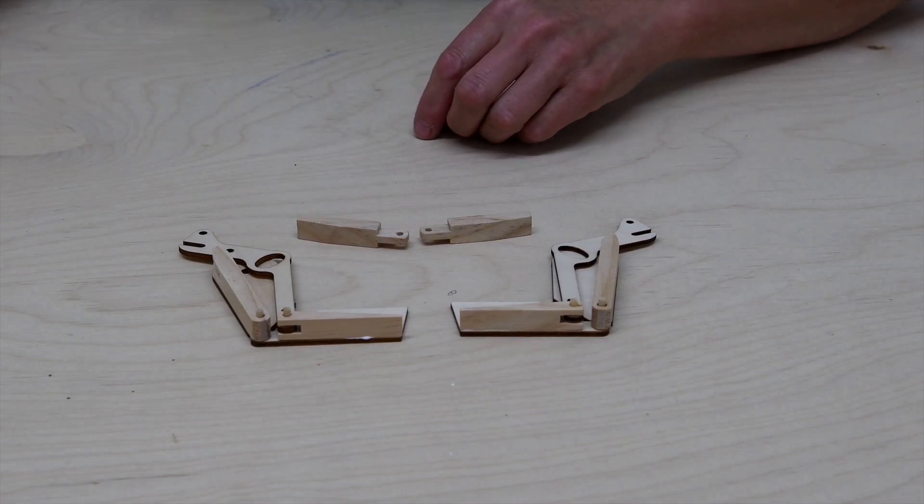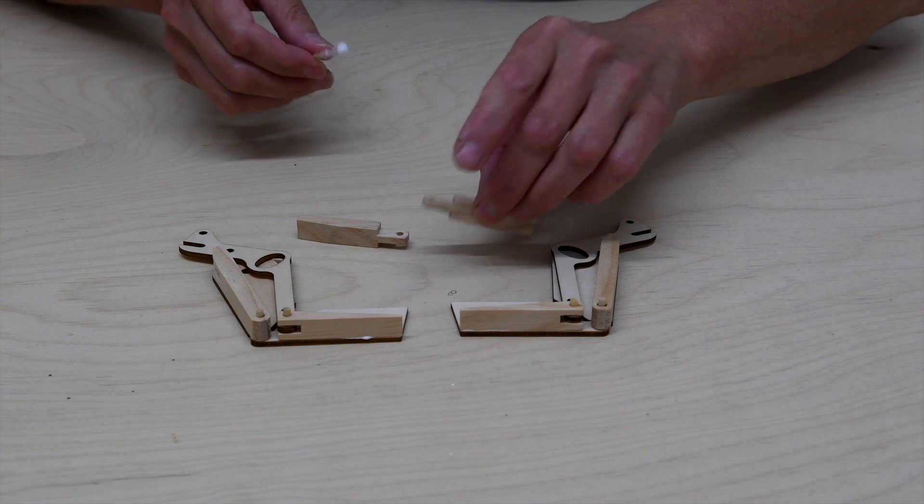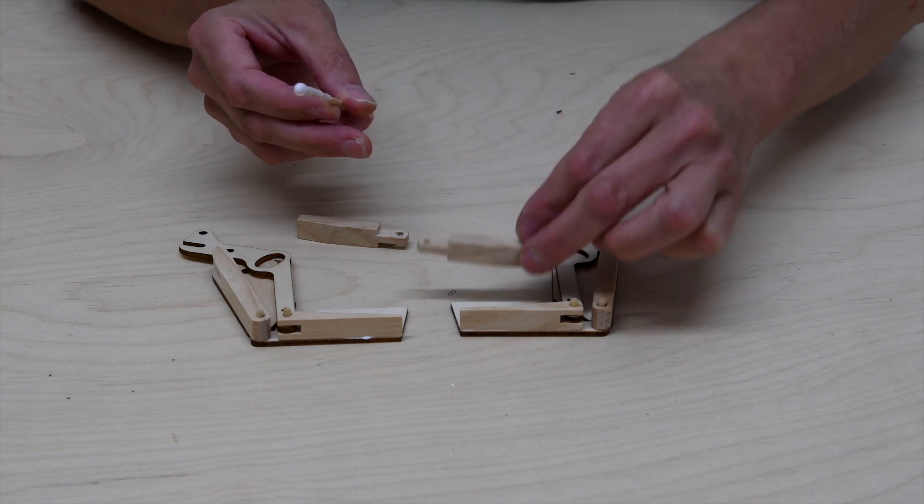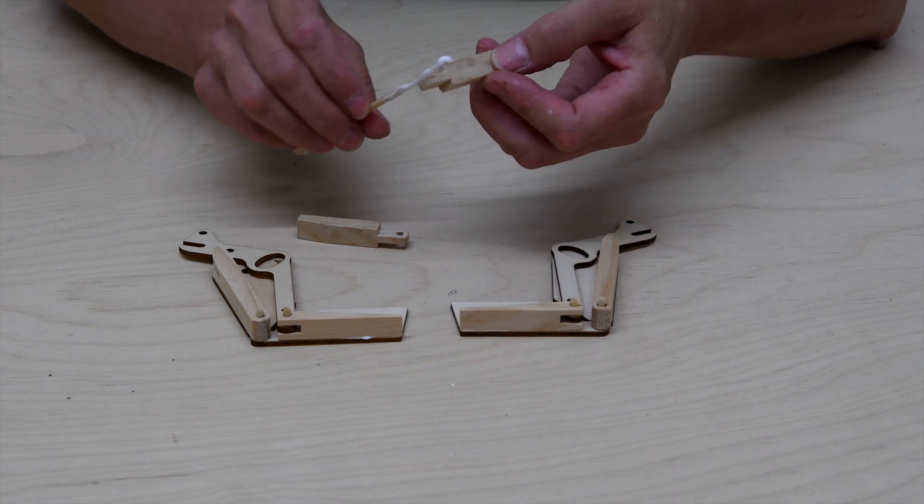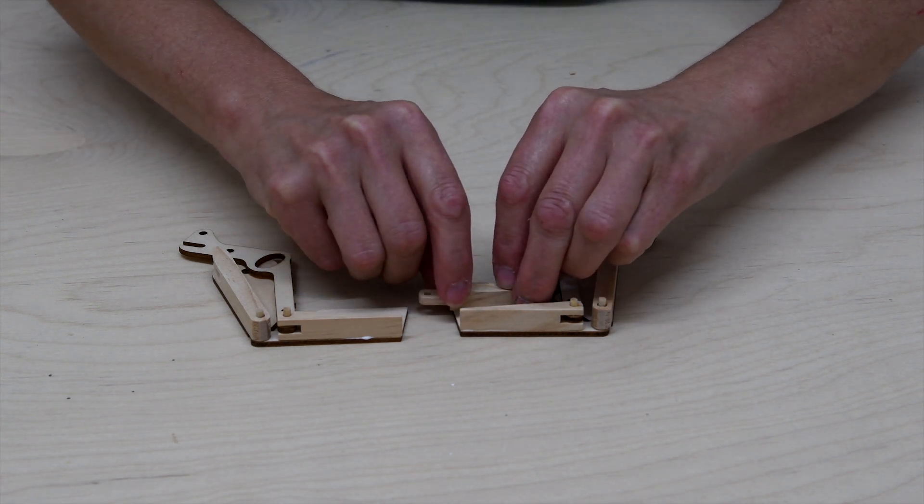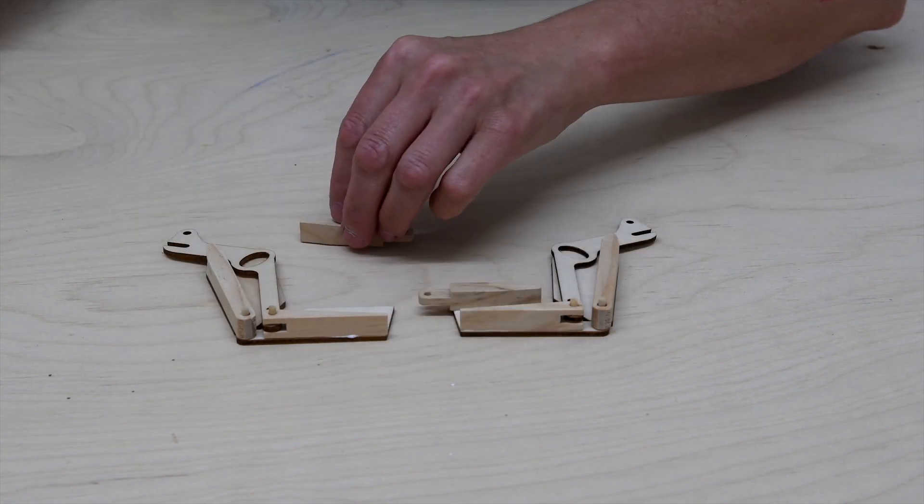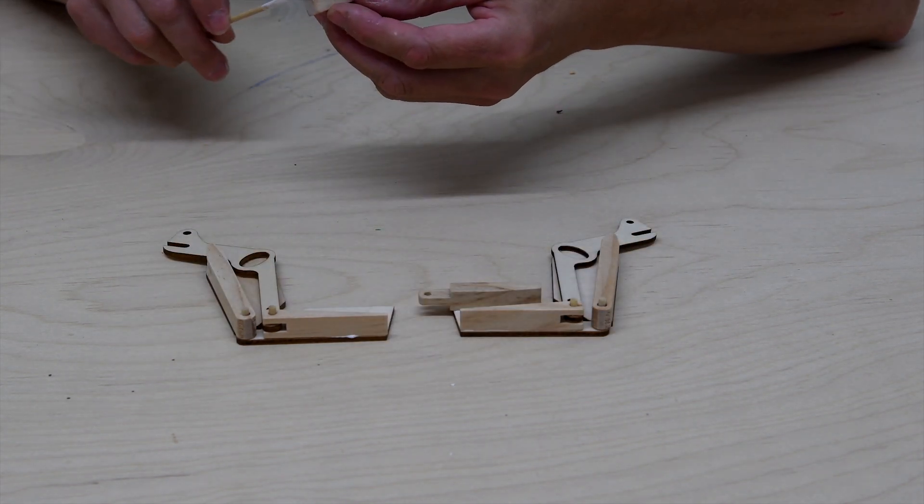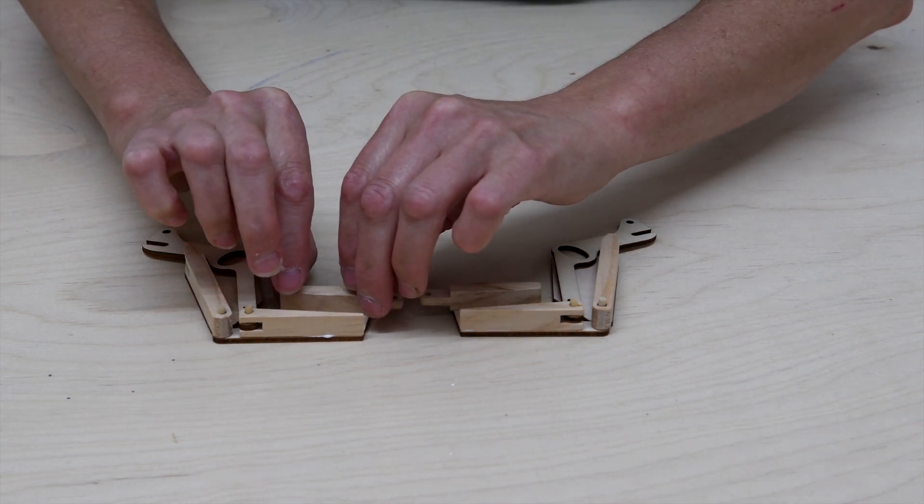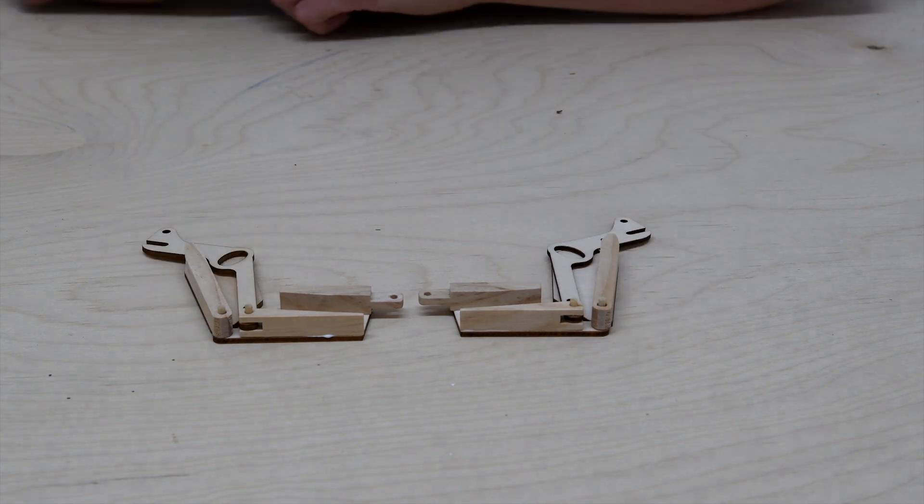The next stage, gluing part six, just notice there's a slight angle on one side and you want that going to the center of the leg. You can glue both legs at the same time if you're doing them as a mirror pair. Glue on the edge and just line up with the edge. Leave to dry.